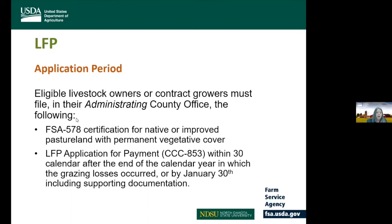Producers with grazing losses must file both the FSA-578 acreage report and the LFP application for payment in their administrating county office. The deadline to file the application for LFP payment is 30 calendar days after the end of the calendar year in which the losses occurred — eligible producers would have until January 30, 2022, and must include all supporting documentation.